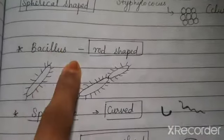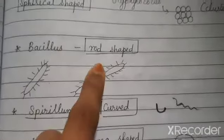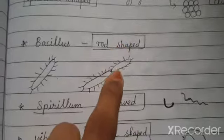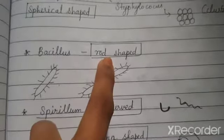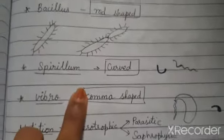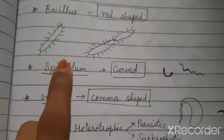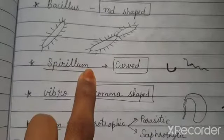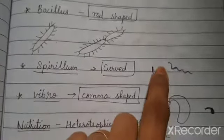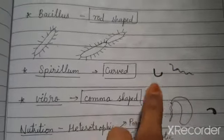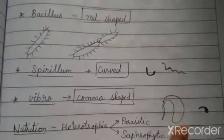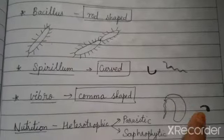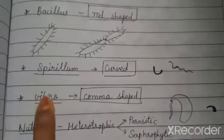Bacillus bacteria appear in a rod-like structure and are named based on their rod shape. The third type is spirillum — curve-shaped bacteria. The fourth type is vibrio — comma-shaped bacteria. So bacteria are classified and named based on their shape.